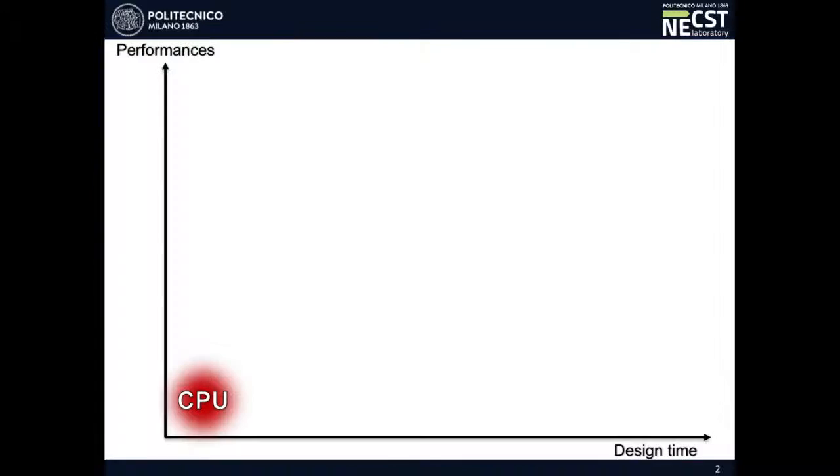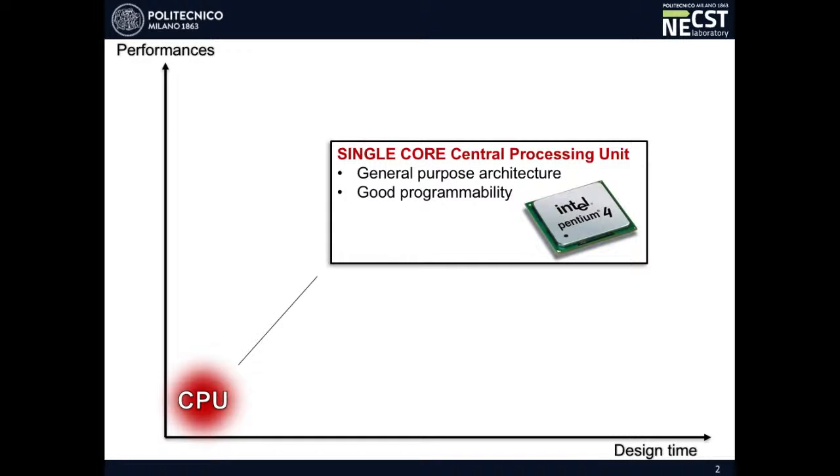So, supposing that you want to speed up your C or C++ algorithm that on CPU runs super slowly and you don't like that. Let's see how to deal with that and the different solutions you can go for, comparing them on performances and design time.